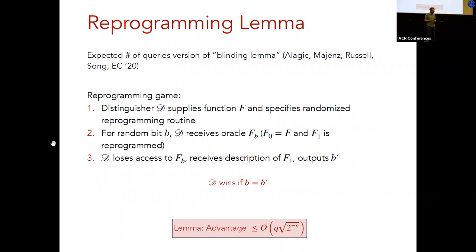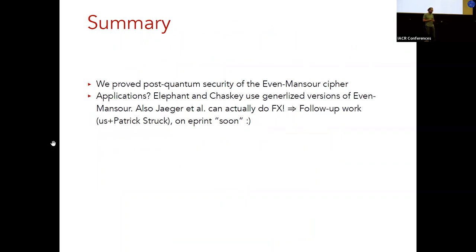Okay. So, I think it's time to summarize. So, we have proved the post-quantum security of the Even-Mansour cipher. And this is in this Q1 model that should be sufficient for security of classical cryptographic algorithms. And I mentioned applications of Even-Mansour-like constructions. The reason why I didn't go into detail is because these applications, for example, the applications to Elephant and also the ISO-standardized MAC Chaskey, they actually use generalized versions of the Even-Mansour construction.